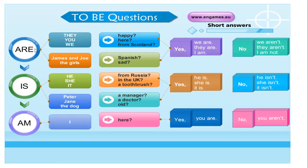Again, remember that we use 'are' for they, you, and we. Are they happy? Are you here? Are we from Scotland? Yes we are / Yes they are / Yes I am. No we aren't / No they aren't / No I am not. If we personalize: James and Joe — Are James and Joe Spanish? Are the girls sad? We use 'is' for he, she, it: Is he from Russia? Is she in the UK? Is it a toothbrush? Yes he is / Yes she is / Yes it is. Or no he isn't / No she isn't / No it isn't.